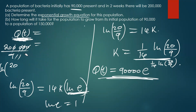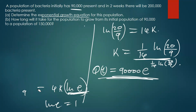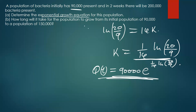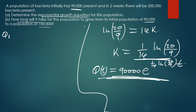To find other solutions, we replace the value of t. I forgot to write t on this side. Now they're asking how long it will take for the population to grow from 90,000 to 150,000. So where we have q(t) we replace with 150,000, and q₀ is replaced with 90,000. We have e to the power kt, so we substitute: 150,000 = 90,000 × e to the power kt.